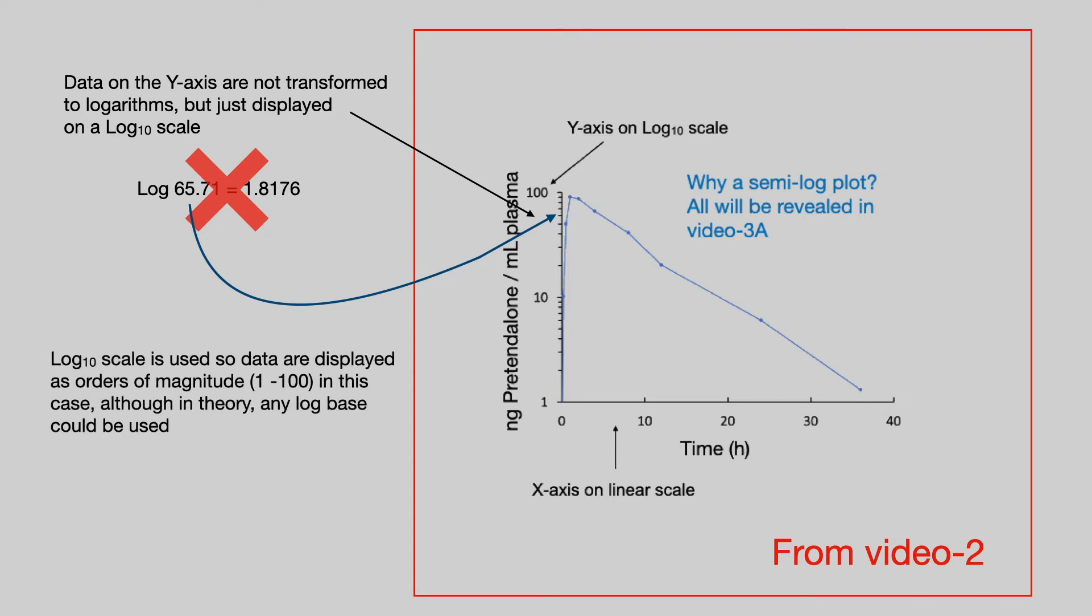A log 10 scale is used really out of convenience because it displays orders of magnitude. It's 1 to 100 in this case. However, in theory, you could use a log to any base and you will still get that straight line for first order elimination.